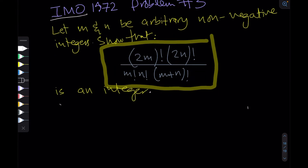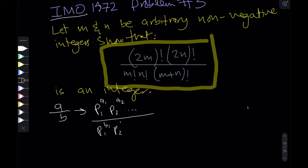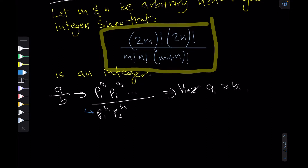If a over b is an integer and we take their prime factorizations — p1^a1 × p2^a2 ... divided by p1^b1 × p2^b2 ... — then for a/b to be an integer it must always be the case that a_i ≥ b_i for all i. Simply because if b_i were greater, there would be a prime factor left in the denominator, and so it could not be an integer.